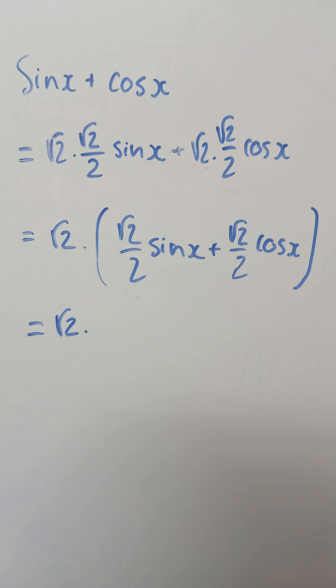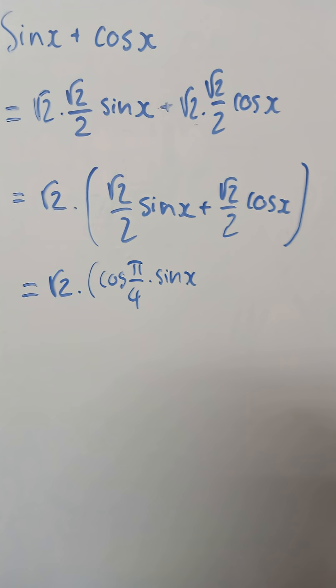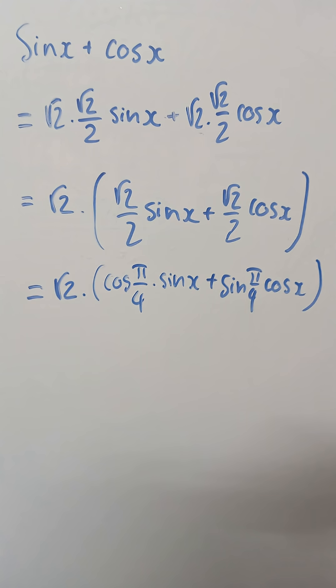Replace each square root of 2 over 2. We will get the square root of 2 times cosine of pi over 4 times sine x plus sine of pi over 4 times cosine x.